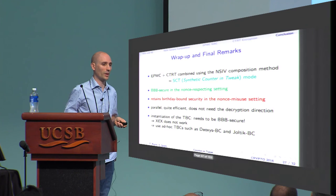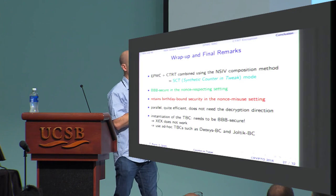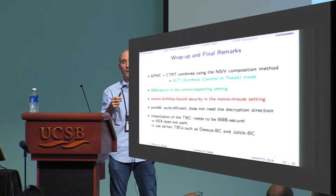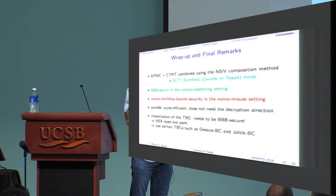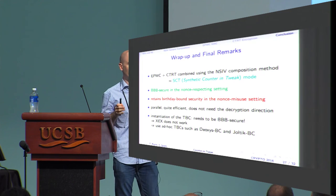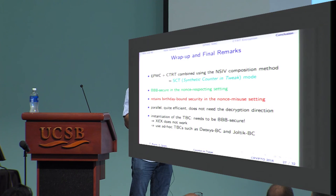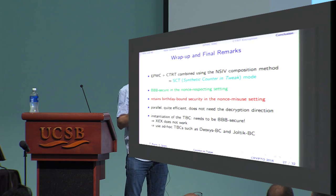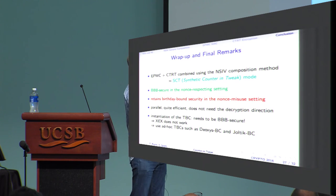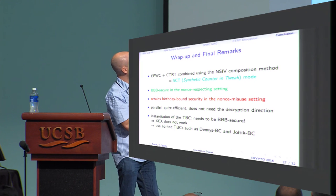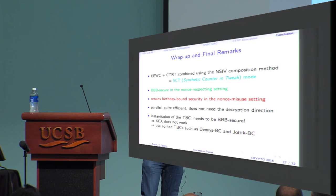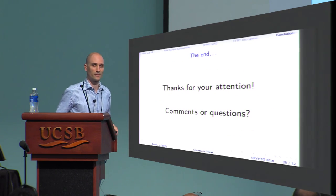A final caveat about instantiating the tweakable block cipher: to get beyond birthday security when nonces do not repeat, you really need to instantiate your tweakable block cipher with something beyond birthday secure — meaning you cannot use the standard XEX generic construction. Ideally you need a dedicated tweakable block cipher with no known weakness. For example, with Deoxys and Joltik this is fine because these tweakable block ciphers have not been attacked. But keep in mind you must be careful when instantiating the tweakable block cipher in this mode. Thank you.